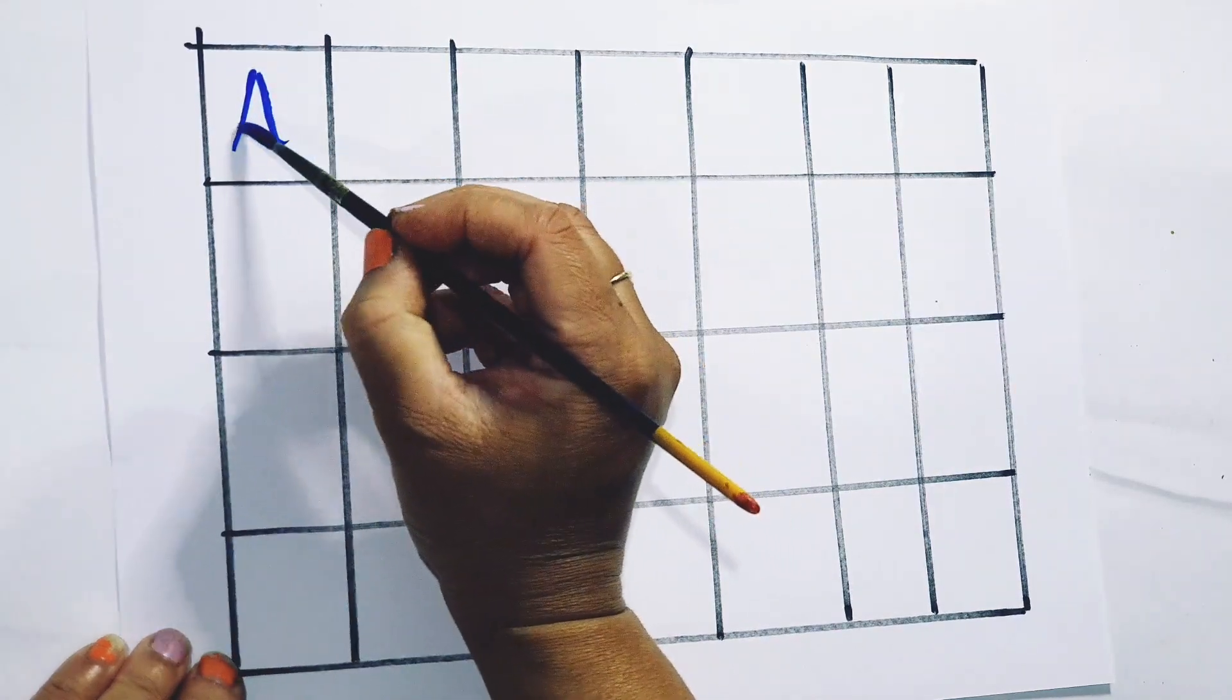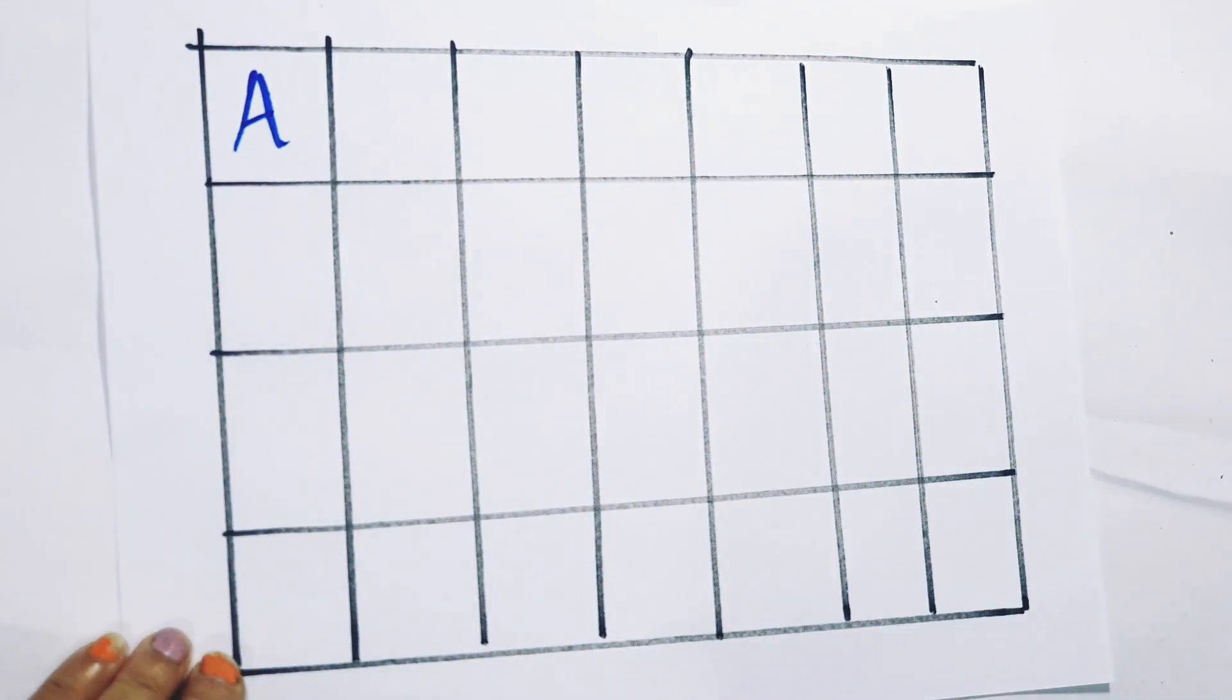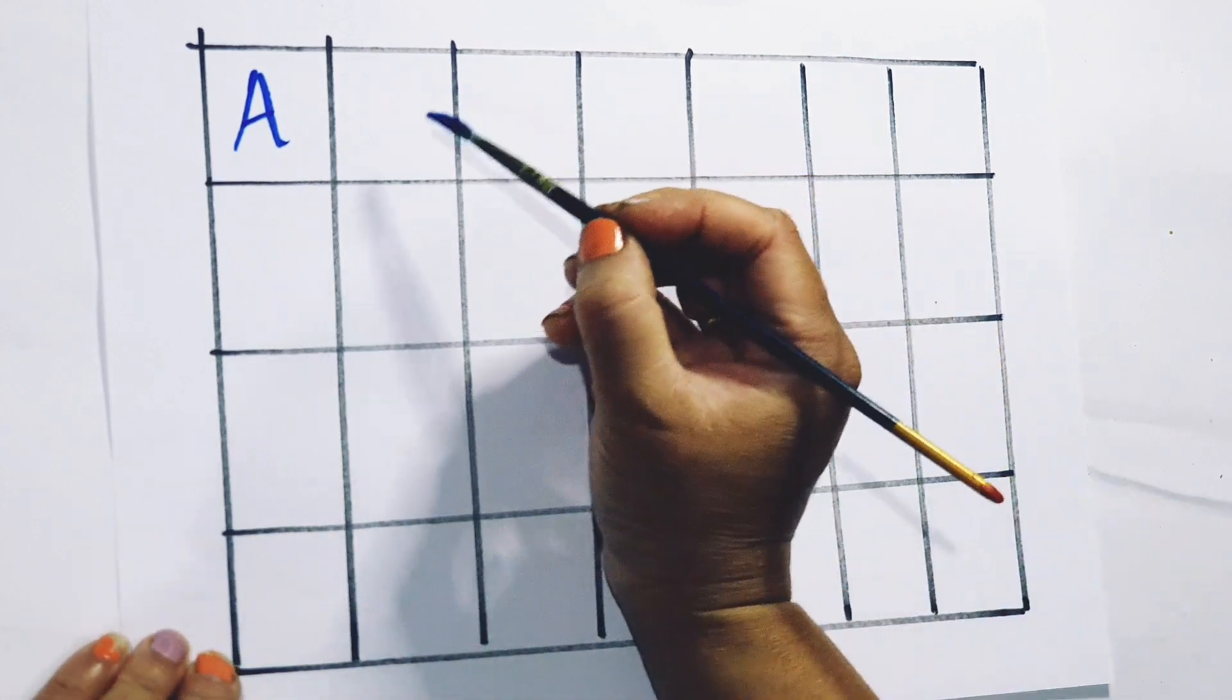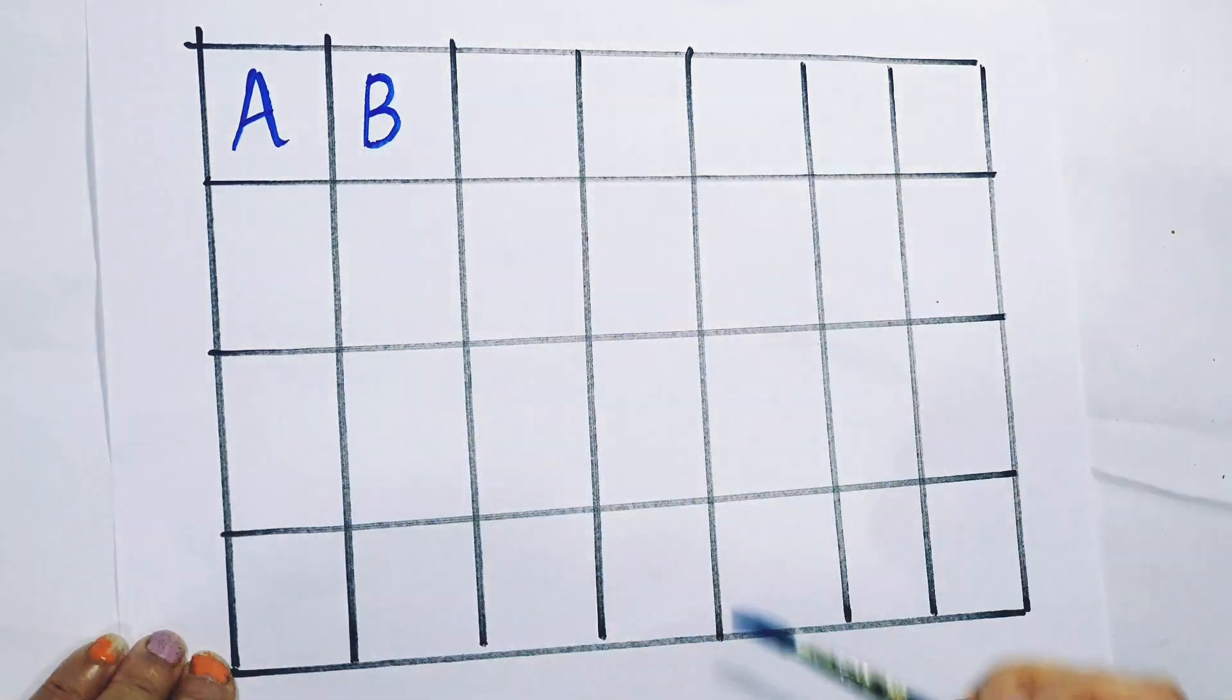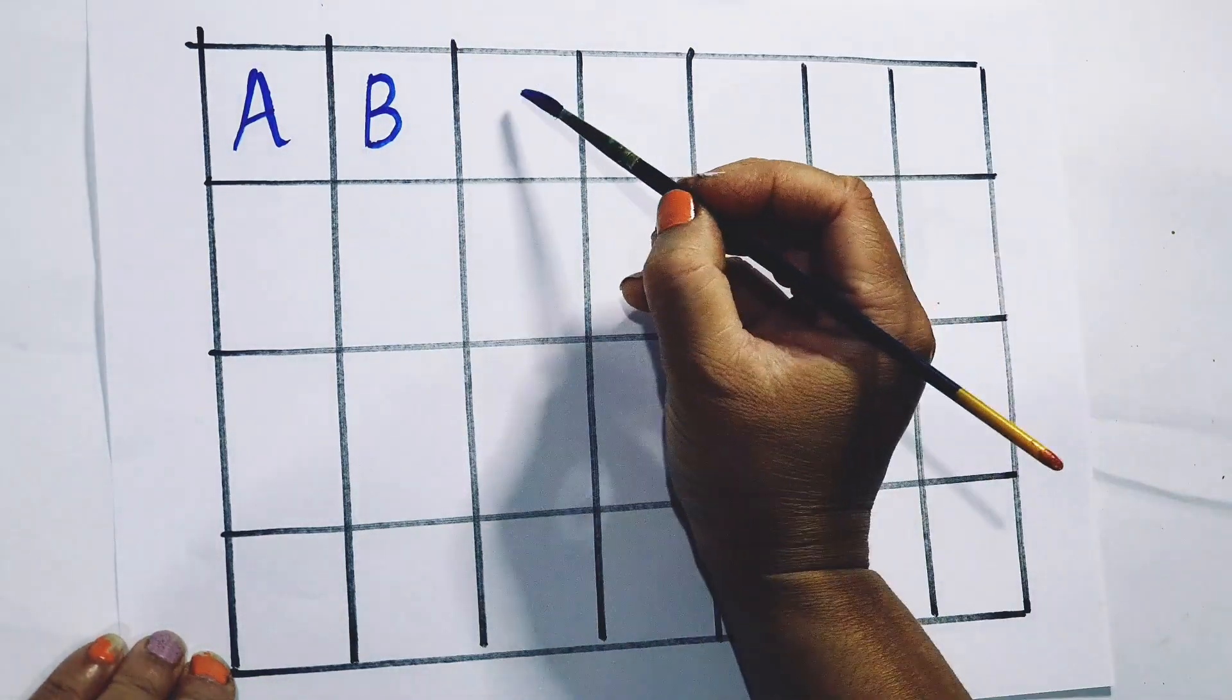Blue color. A. A for aeroplane. A for apple. B. B for butterfly. B for banana.